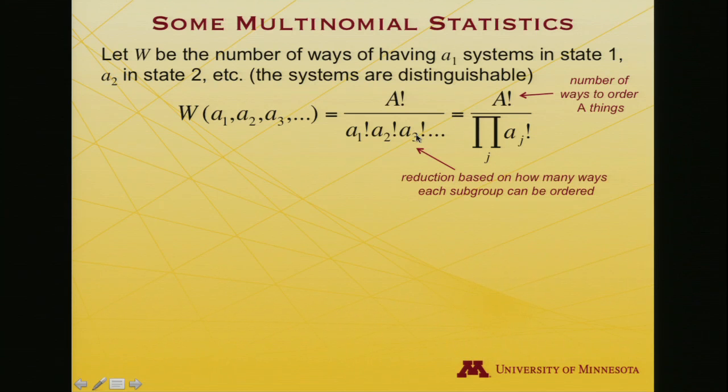The number in each individual state factorial, that's how many ways I could reorder those, appears in the denominator. And so I'll just write that more simply as a product over all the number of states I'm considering of the number of systems in that state factorial.